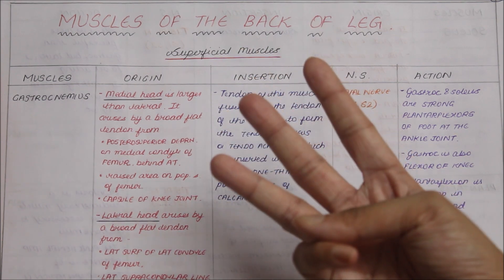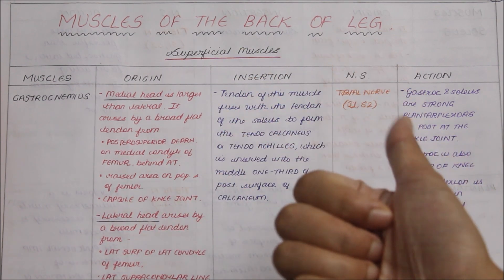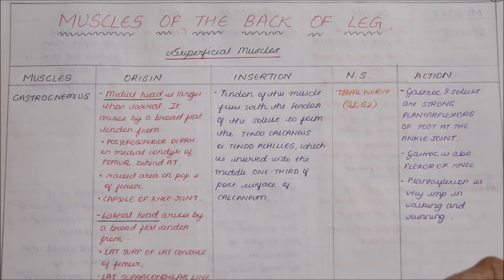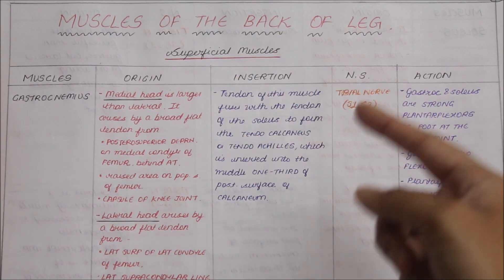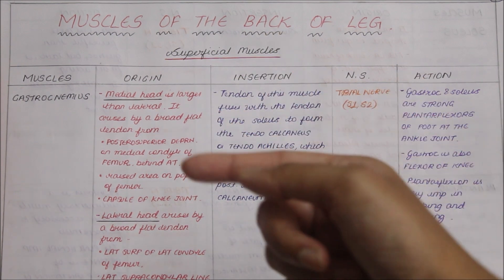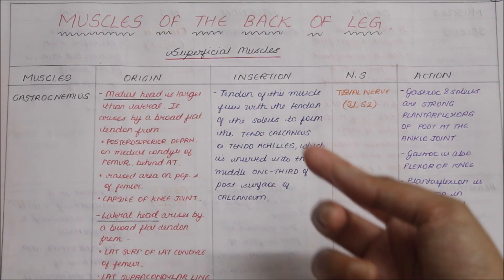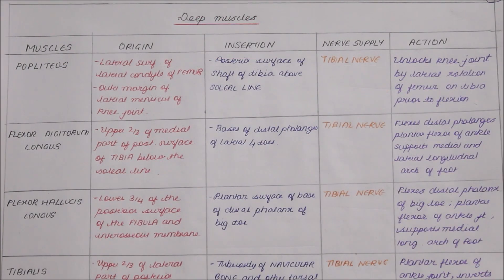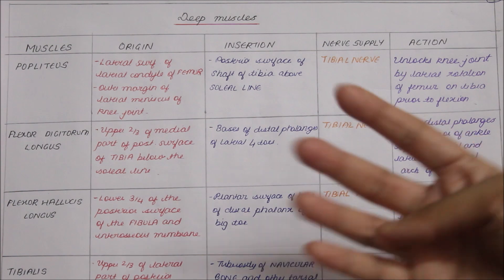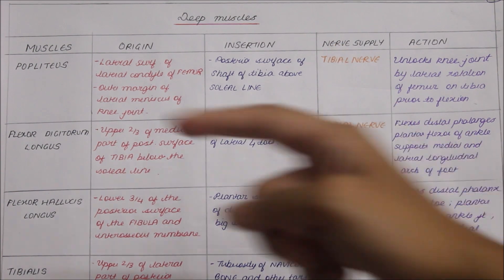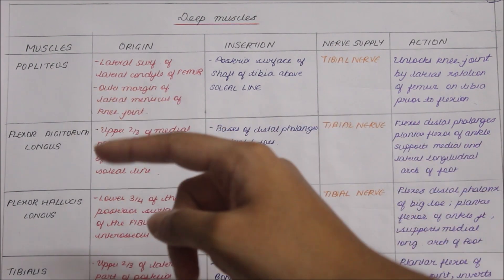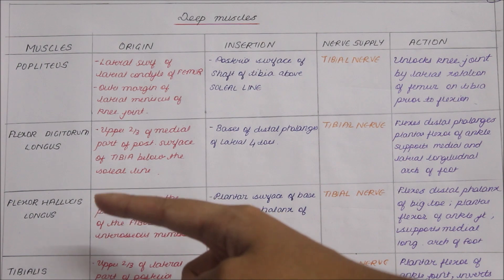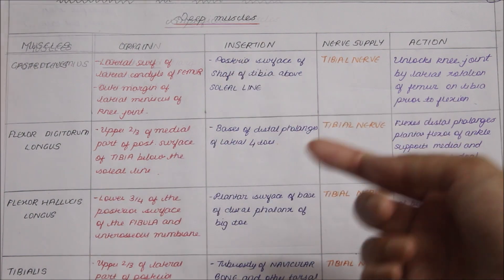The three superficial muscles are gastrocnemius, plantaris, and soleus. They can be remembered with the mnemonic GPS: G stands for gastrocnemius, P for plantaris, and S for soleus. The four deep muscles are the popliteus, the flexor digitorum longus, the flexor hallucis longus, and the tibialis posterior.